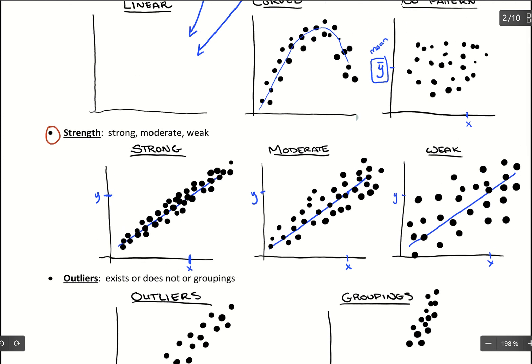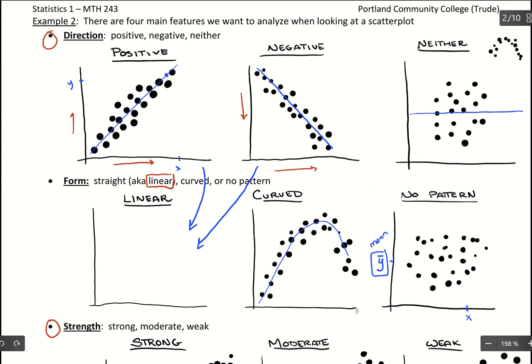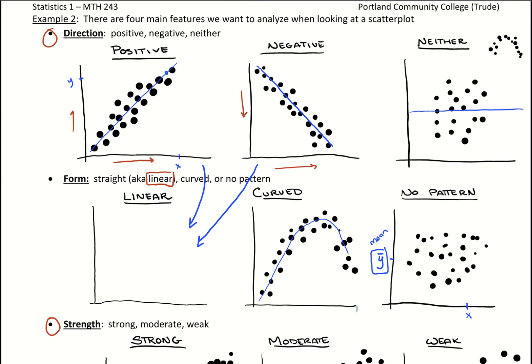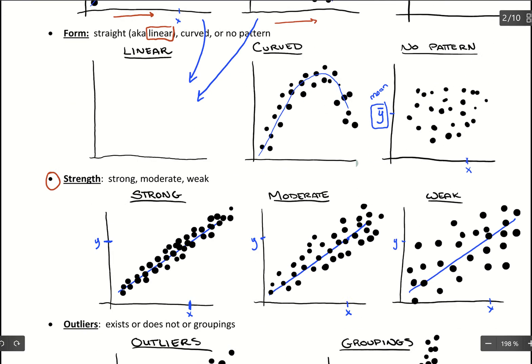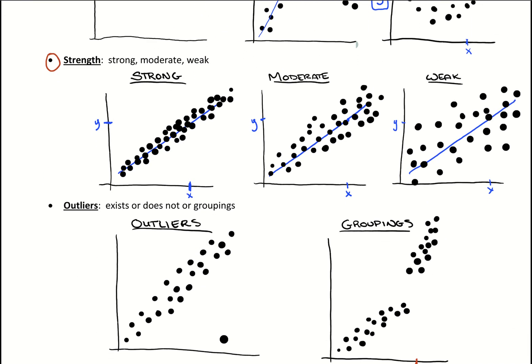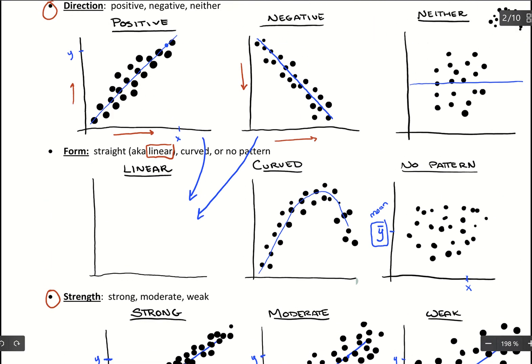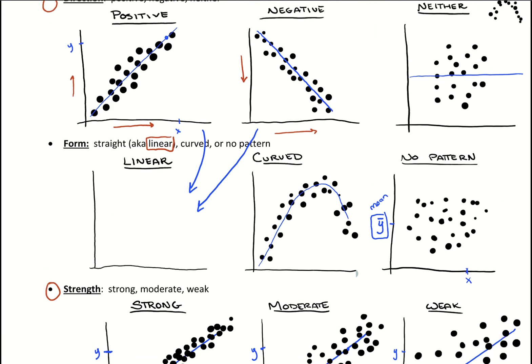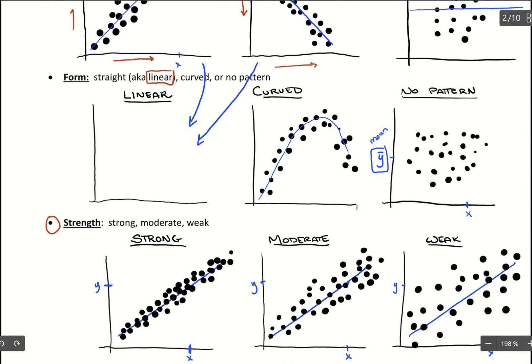So these are the different graphs that we have. Then what we want to end up with is with a scatterplot. First, we want to start with making sure that it's linear, then looking at it, make sure there aren't any outliers or any groupings. And then from there, we could get this description of direction and strength. Is it increasing or decreasing? And then how well is it fitting this linear trend?